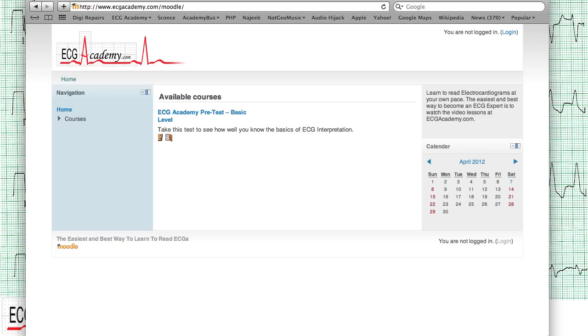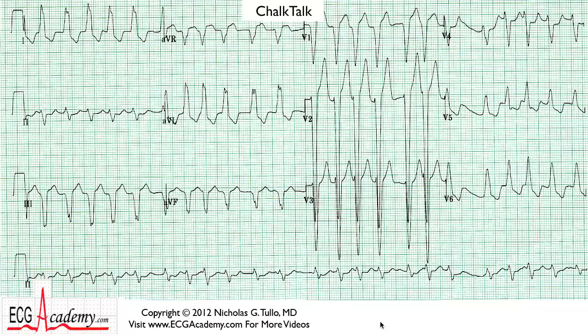Now let's get to our Chalk Talk. I label this a wide QRS tachycardia because there are two characteristics: the QRS is wide, and the heart rate is fast.